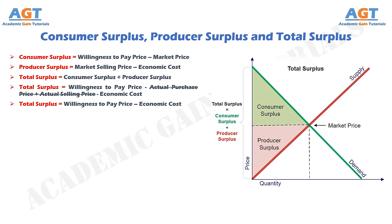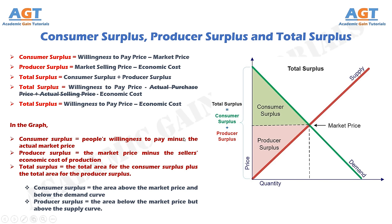Economic costs refer to not only the seller's cost of materials and labor, but also the opportunity cost of the seller's time and effort. Hence, economic cost includes a normal profit. In this graph, consumer surplus equals people's willingness to pay minus the actual market price, while producer surplus equals the market price minus the seller's economic cost of production. Hence, total surplus equals the total area for consumer surplus plus the total area for producer surplus. Consumer surplus equals the area above the market price and below the demand curve, while producer surplus equals the area below the market price but above the supply curve.